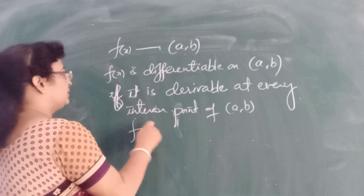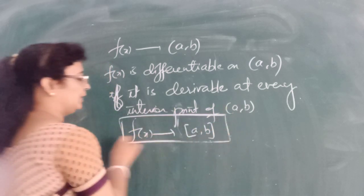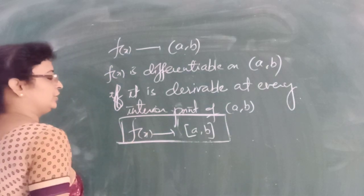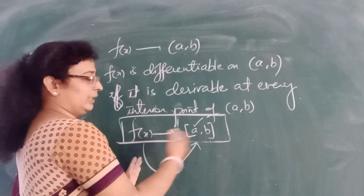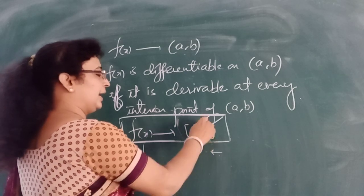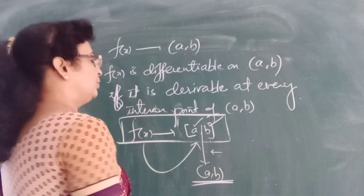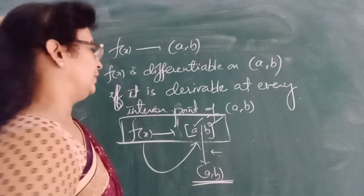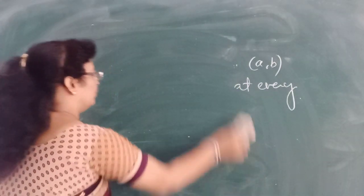Similarly, if f(x) is a function defined on the closed interval [a, b] and is differentiable at each and every point of the open interval (a, b), then if the function is differentiable at every point of the closed interval [a, b], we say that the function is differentiable on the closed interval.